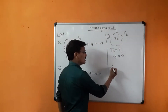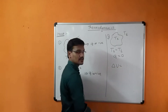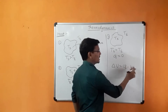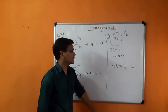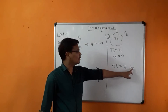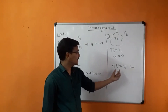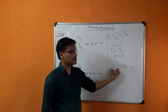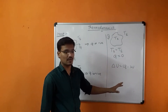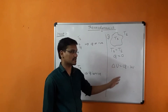The first law of thermodynamics states that delta U equals Q minus W, or Q minus delta W. Since heat can be positive, negative, or zero, and work done can also be positive, negative, or zero, the internal energy delta U is also positive, negative, or zero.